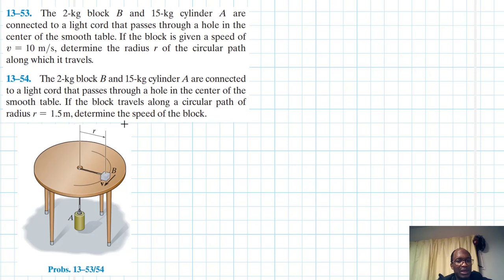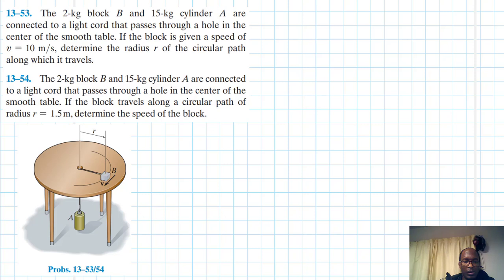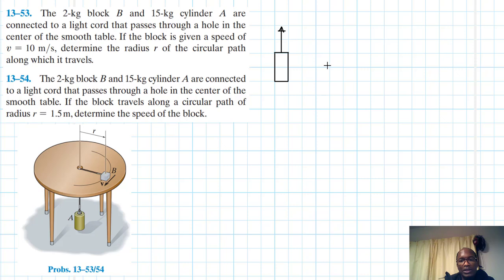In the first case we determine the radius, in the second we determine the speed. Let's draw the free body diagram. We have a cylinder — let's draw it here — the cylinder has some weight.